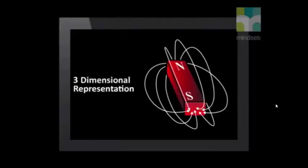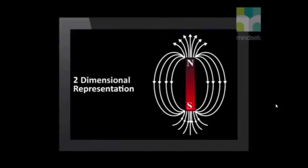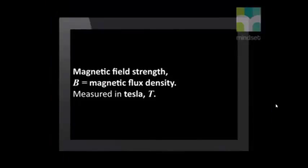The magnetic field lines can be represented on a diagram in three dimensions or in two dimensions, as you can see here. Where the lines are very close together or most dense, the magnetic field strength is very strong. The magnetic field strength is indicated with the symbol B. The strength of the magnetic field is also sometimes known as the magnetic flux density, B, and the unit for B is Tesla with the symbol T.